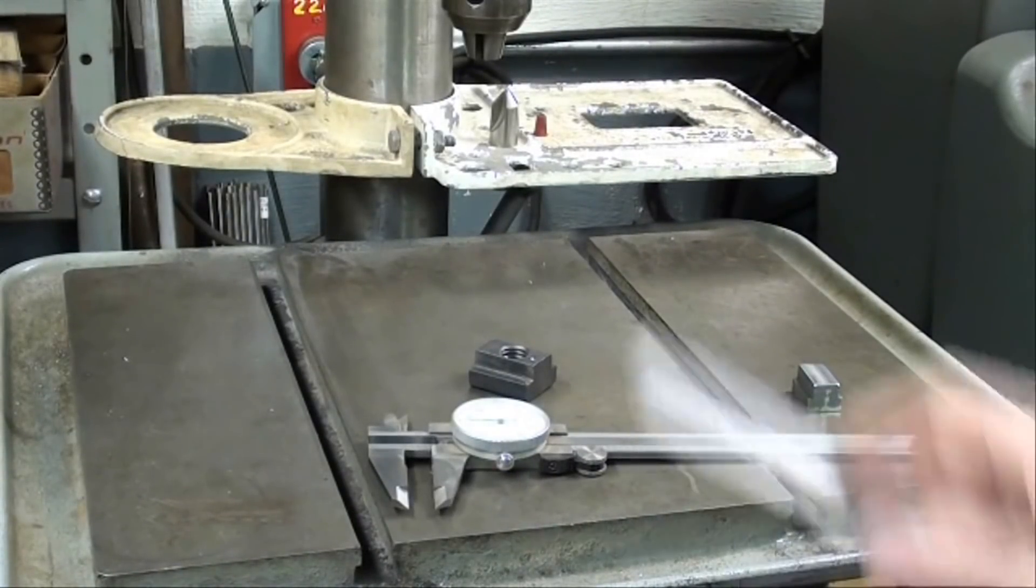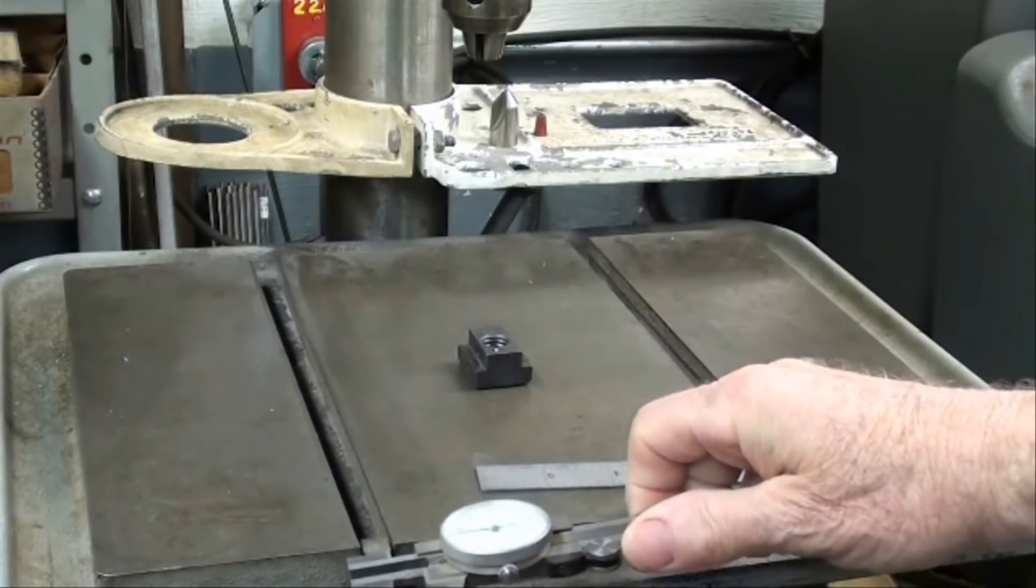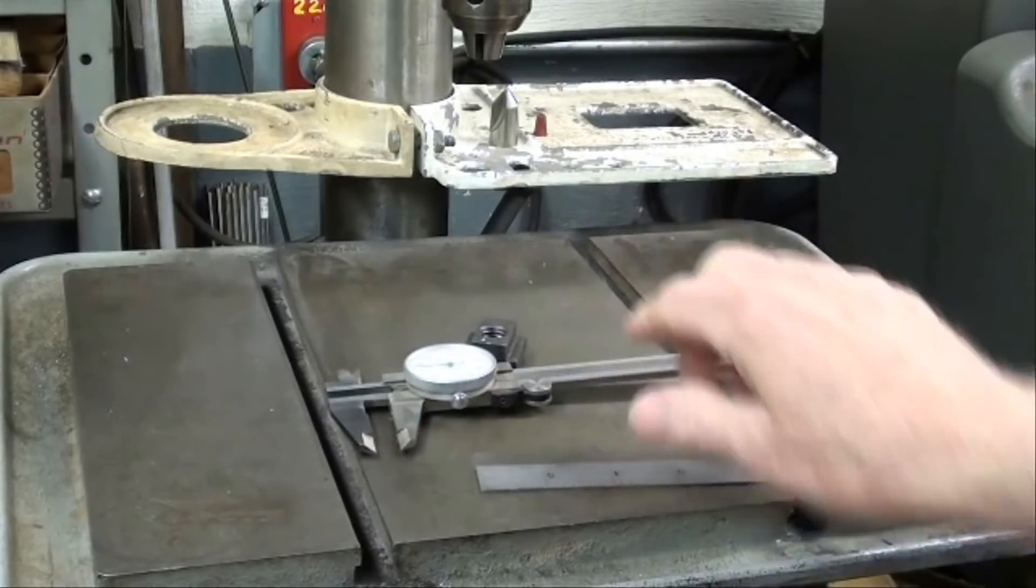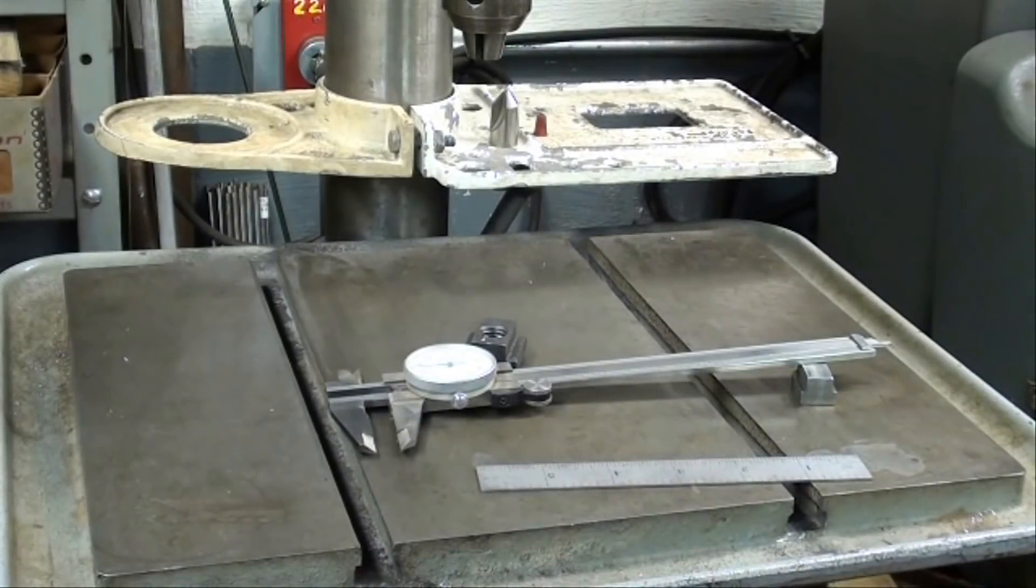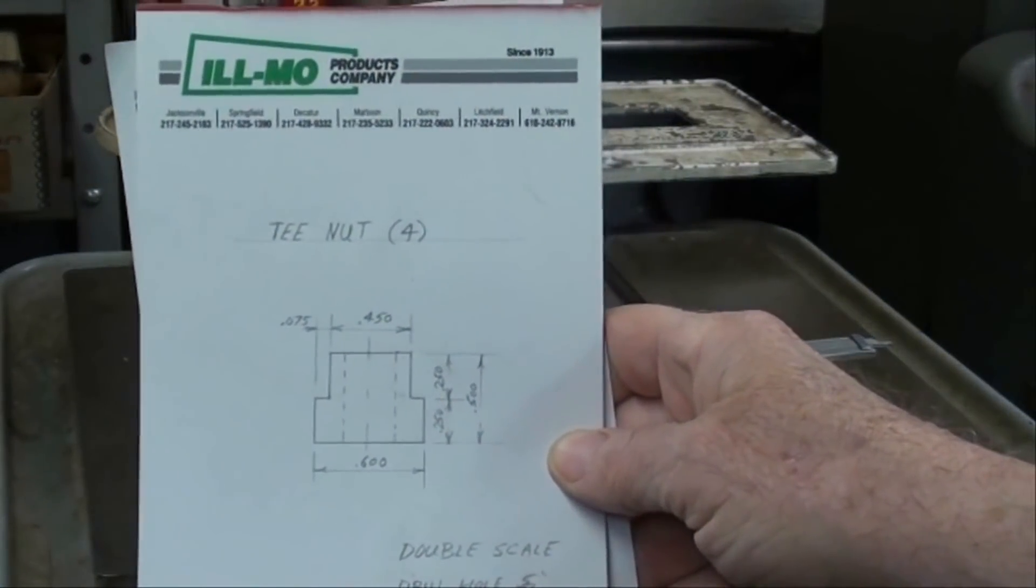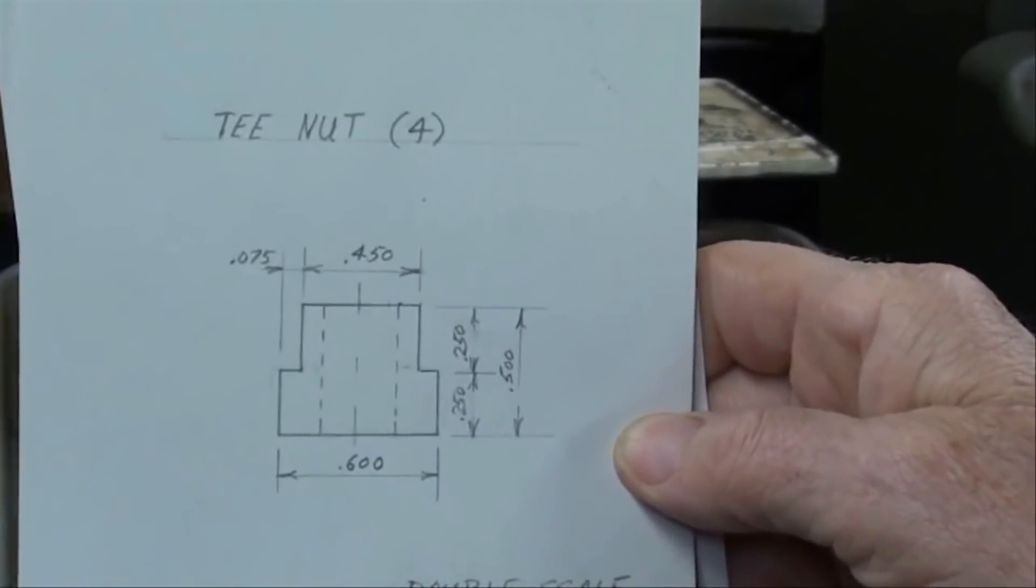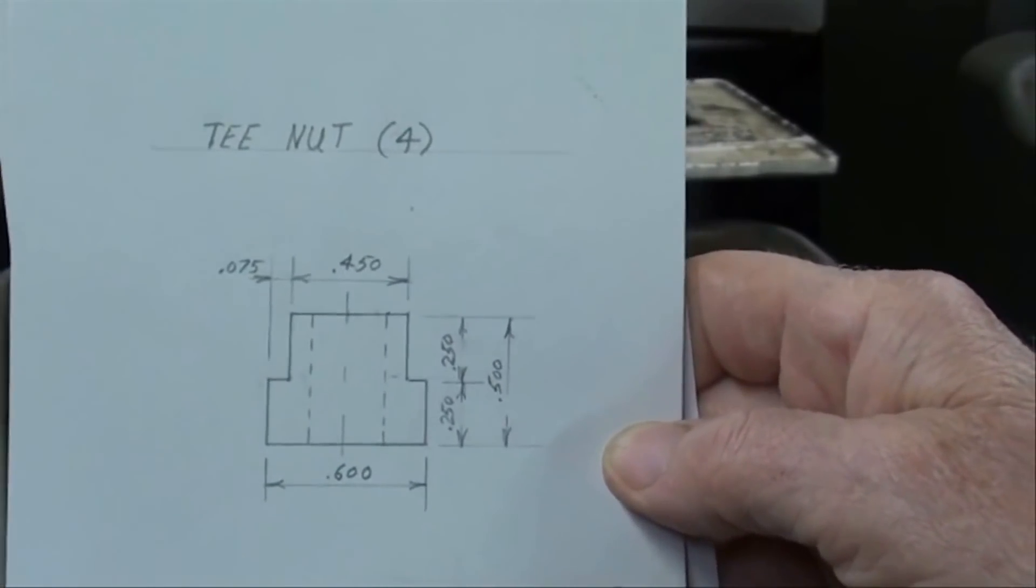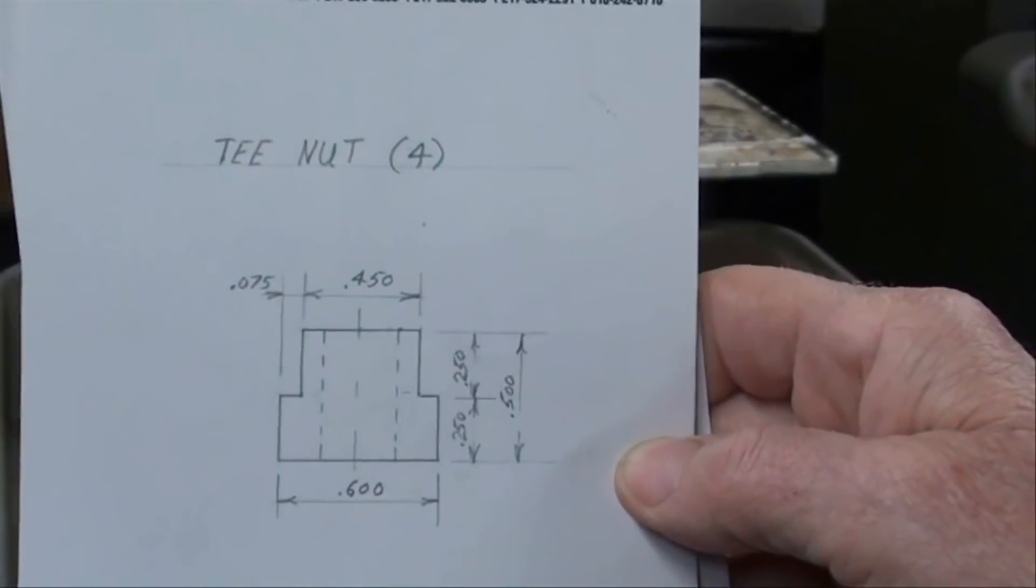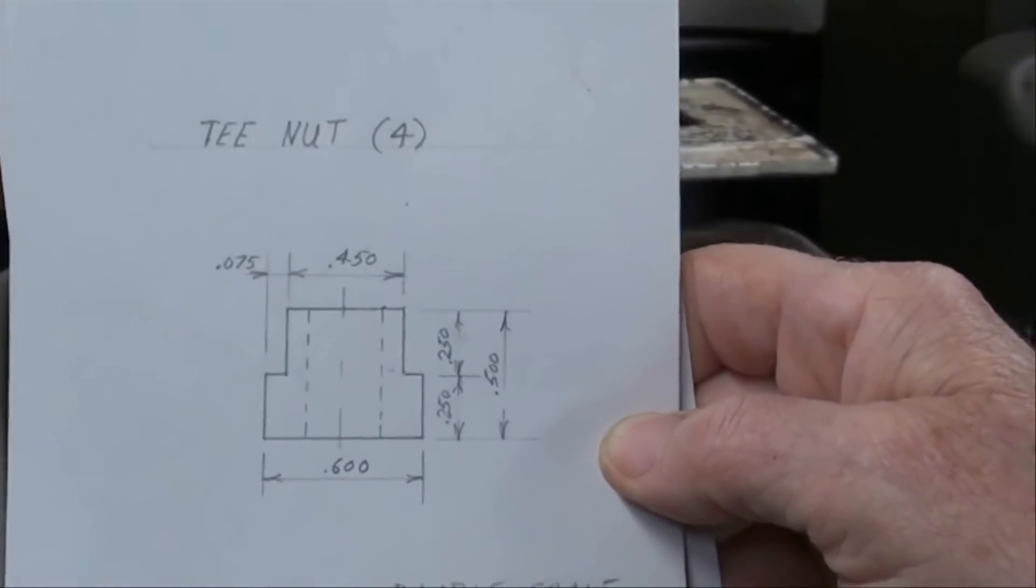The first thing I did was take my dial calipers and scale and measure the width of the slot, the depth, the width in two places. Normally I just put a few dimensions down on paper, but for this demonstration I made a little drawing. There are the dimensions: six hundred thousandths at the widest dimension, the height is five hundred thousandths, which is a half inch, and all the other dimensions are on there as well.